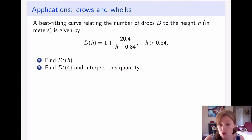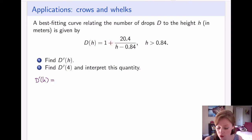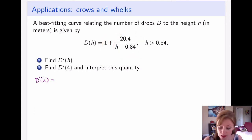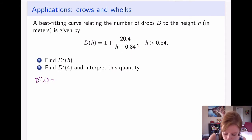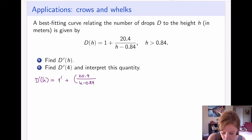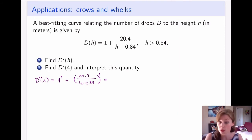The question is to find the derivative of that function, compute it at four meters, and interpret that quantity. The function is a sum of two things, so we can apply the sum rule and take a derivative of each piece separately. The first piece is easy to differentiate, but the second piece is a quotient, so we'll apply our newly discovered quotient rule. So I can write: the derivative of 1 plus the derivative of 20.4 over (h minus 0.84).